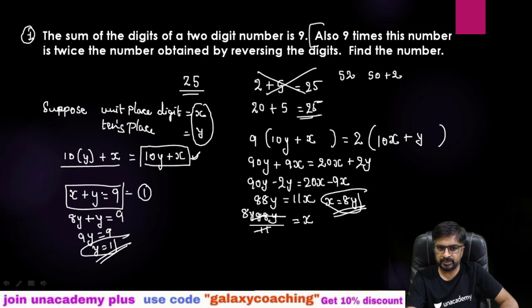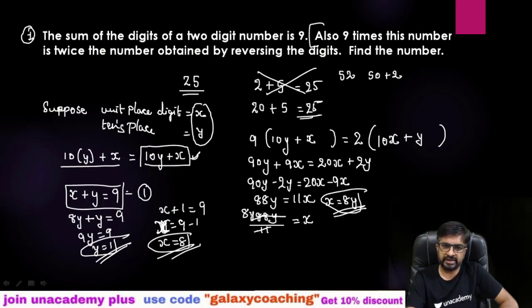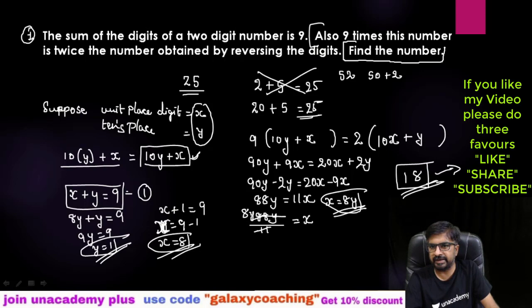Now keep here x + y equals 9. So if you will keep 1 here, x + 1 equals 9. So x will be 9 minus 1. x will be 8. So you got your unit place as 8 and tens place as 1. So 1 and 8 together form a two digit number 18. So the two digit number is 18. This way first you need to find out x and y and just keep on their places. Unit place 8, tens place 1. So 18 is that number.